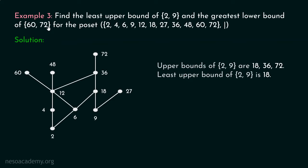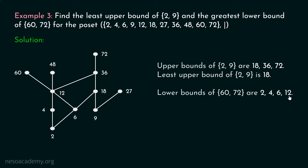In a similar way, we can find all the lower bounds of 60 and 72, and finally find the greatest lower bound of 60 and 72. Lower bounds of 60 and 72 are 2, 4, 6, and 12. Because 2 divides 60 and 2 divides 72; 4 divides 60 and 4 divides 72; 6 divides 60 and 6 divides 72; and 12 divides 60 and 12 divides 72. So 2, 4, 6, and 12 are all the lower bounds of 60 and 72. Now let's find the greatest lower bound — you can clearly see that 12 is the greatest lower bound of 60 and 72, as 12 is the maximum among 2, 4, 6, and 12.